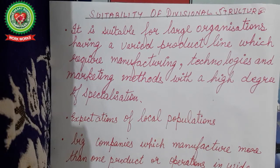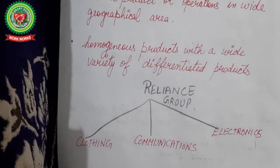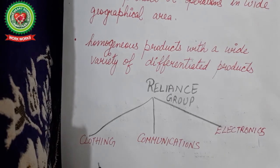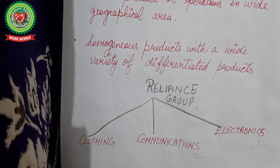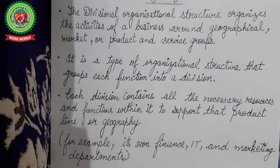Divisional structure is suitable for large organizations which have a varied product line requiring manufacturing, technology, and methods with a high degree of specialization. It aims at meeting the expectations of local populations. Big companies that manufacture more than one product or operate in different geographical areas lead to divisional structure. Homogeneous products with a wide variety of differentiated products are produced under different origins and areas. A very good example is the Reliance Group — clothing, communication, electronics — with different divisions operating worldwide and meeting the expectations of local populations.